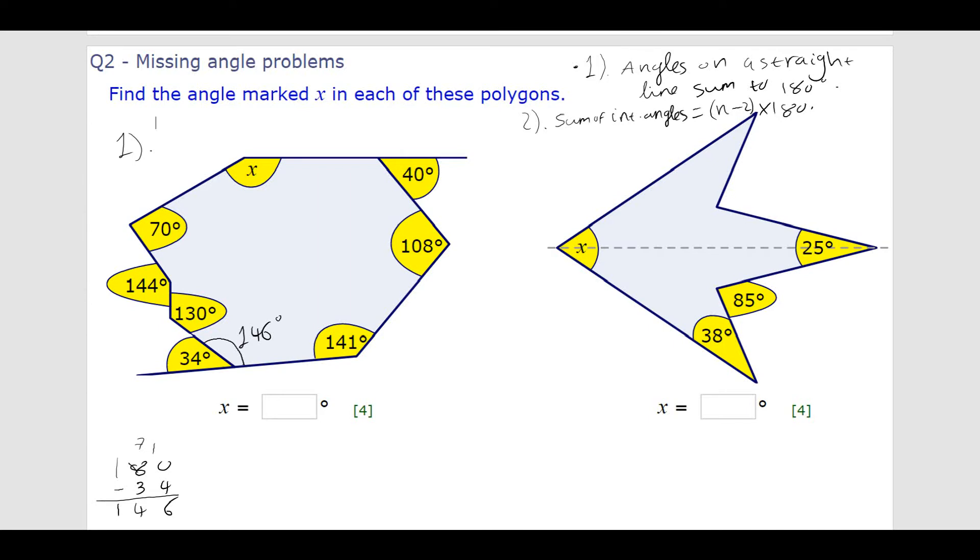So, this missing angle here is 146 degrees. The only other missing angle is at the top right, and I can see that would need to be 140 degrees. Because then, 140 plus 40 is 180, and I have a complete straight line.